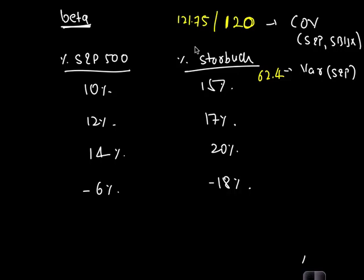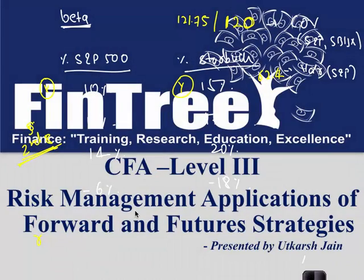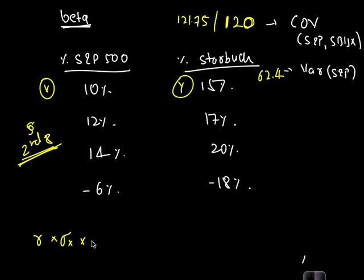Data function is 2nd 7, so enter S&P 500 values as x values, enter Starbucks values as y values. x01 would be 10, y01 would be 15, and so on. Then say 2nd and 8 and go inside the stat function. Once inside, find the correlation coefficient r, then find σx and σy. Multiply the three values and you will have covariance. Correlation into standard deviation 1 into standard deviation 2 is your covariance. 121.75 and variance of x is the square of the standard deviation, 62.75.